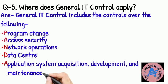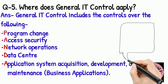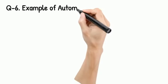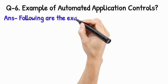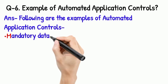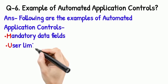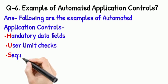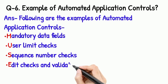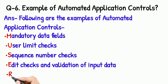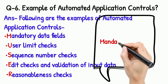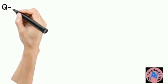Continuing with PANDA: Program Change, Access Security, Network Operations, Data Center, and Application System. Question 6: Examples of Automated Application Controls. The mnemonic is MANDATORY USER — M for Mandatory Data Fields, U for User Limit Checks, S for Sequence Number Check, E for Edit Checks, and R for Reasonable Test Check.